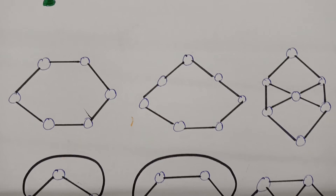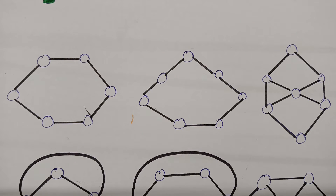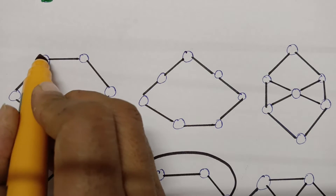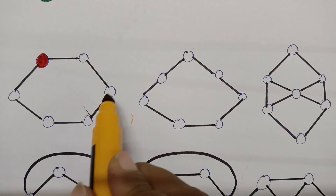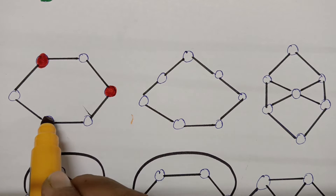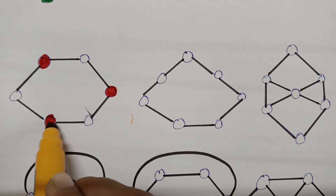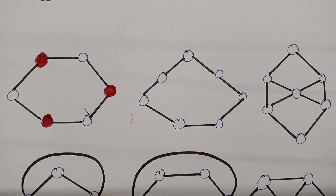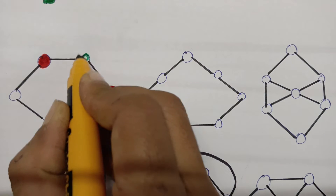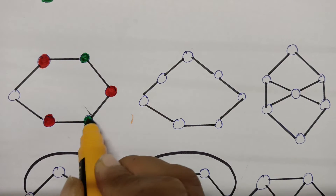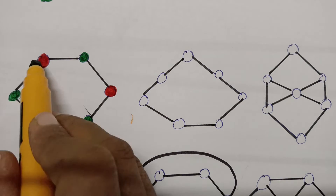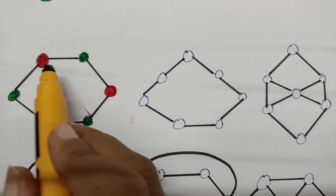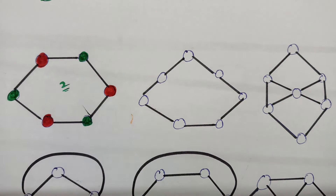For this next graph, I start with red. I skip both adjacent vertices and reuse red on non-adjacent ones. Then I use green, skipping adjacent vertices and applying green to the remaining non-adjacent vertices. No two adjacent vertices get the same color, so the chromatic number here is two.